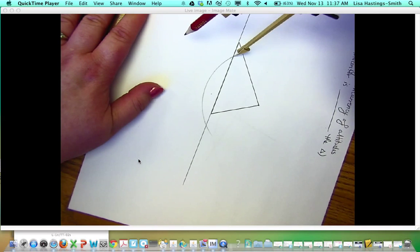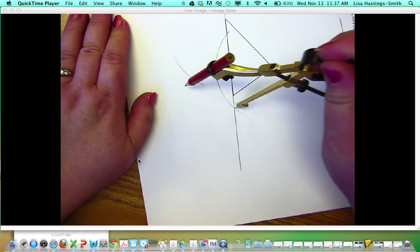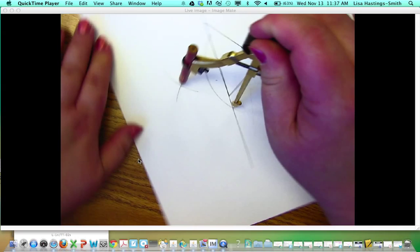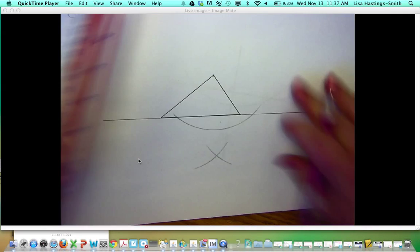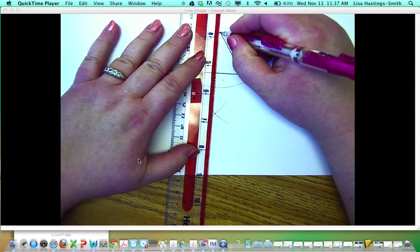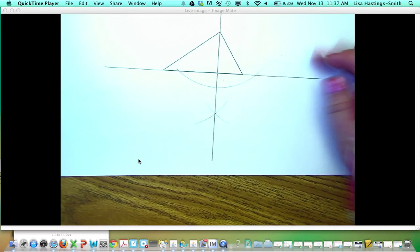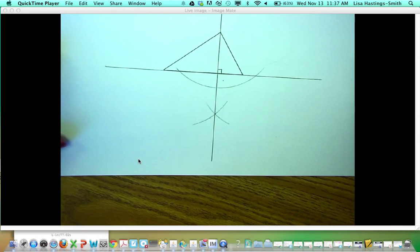and then an arc down here, and an arc down here, I can draw the perpendicular through this X and through that vertex. So there's the first altitude. So those are perpendicular.